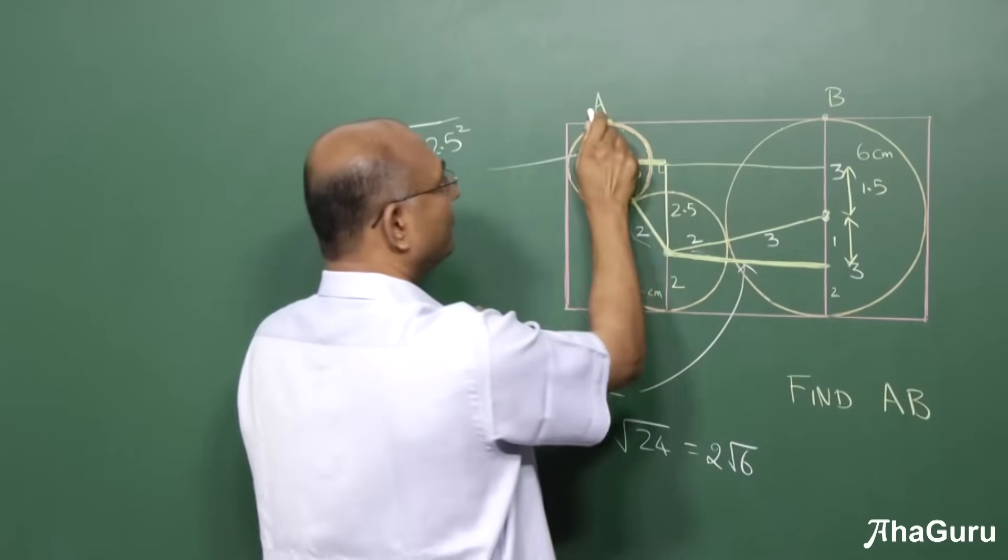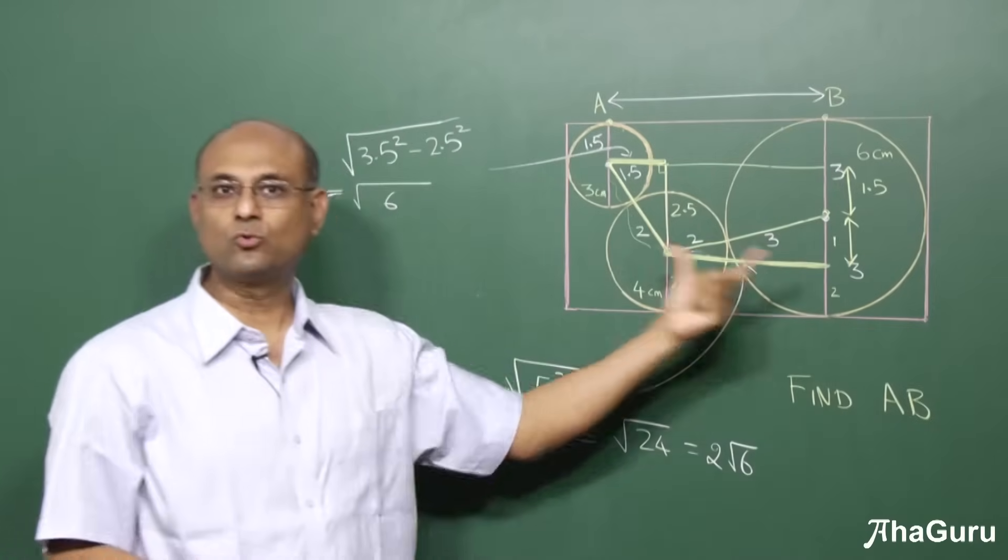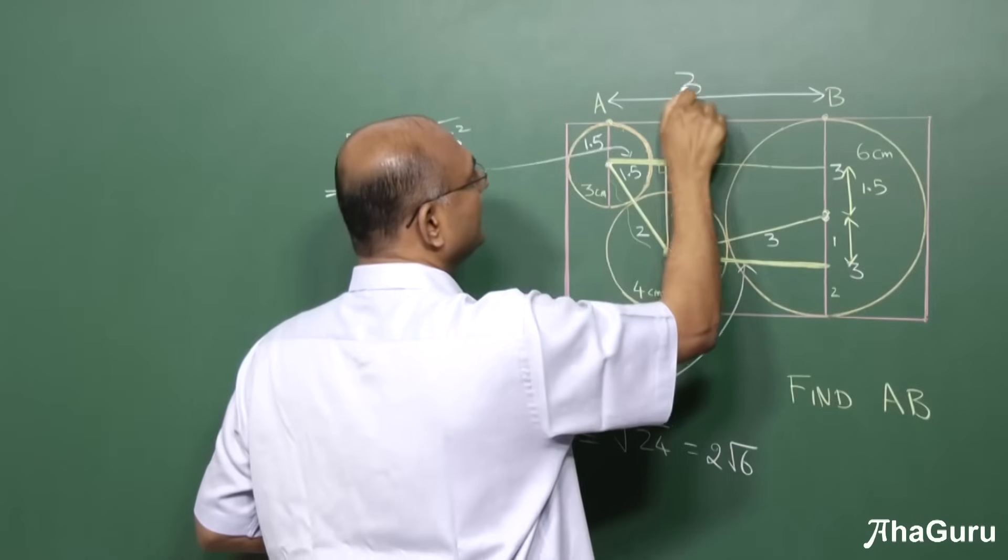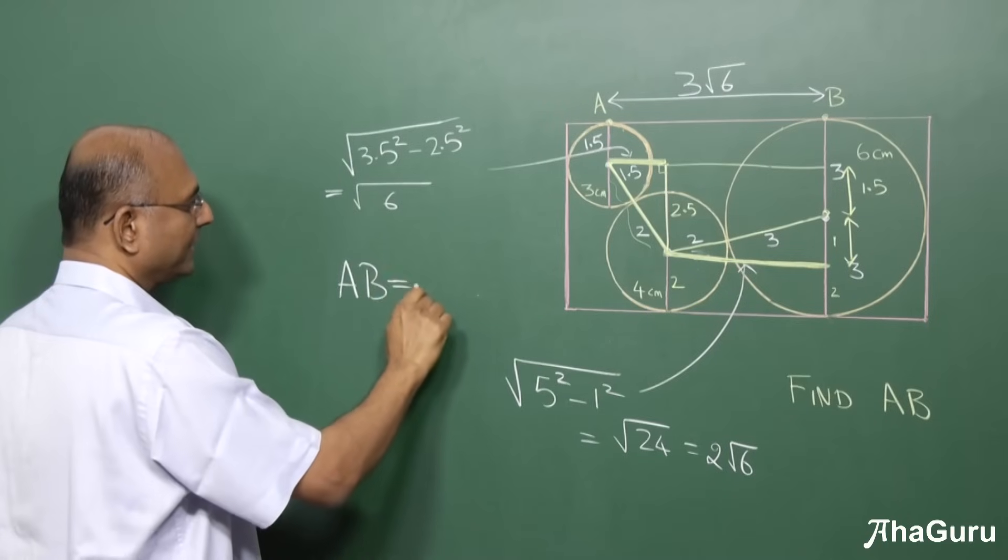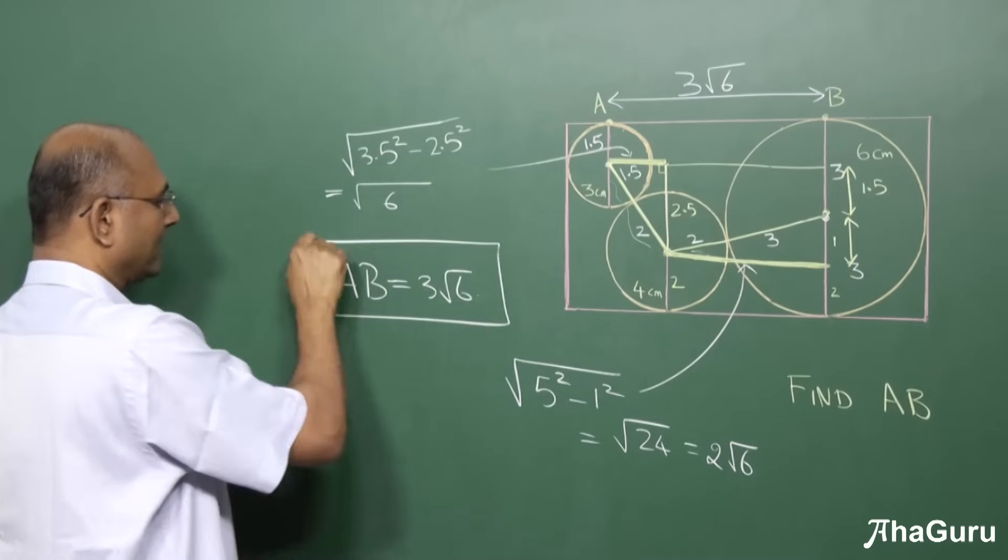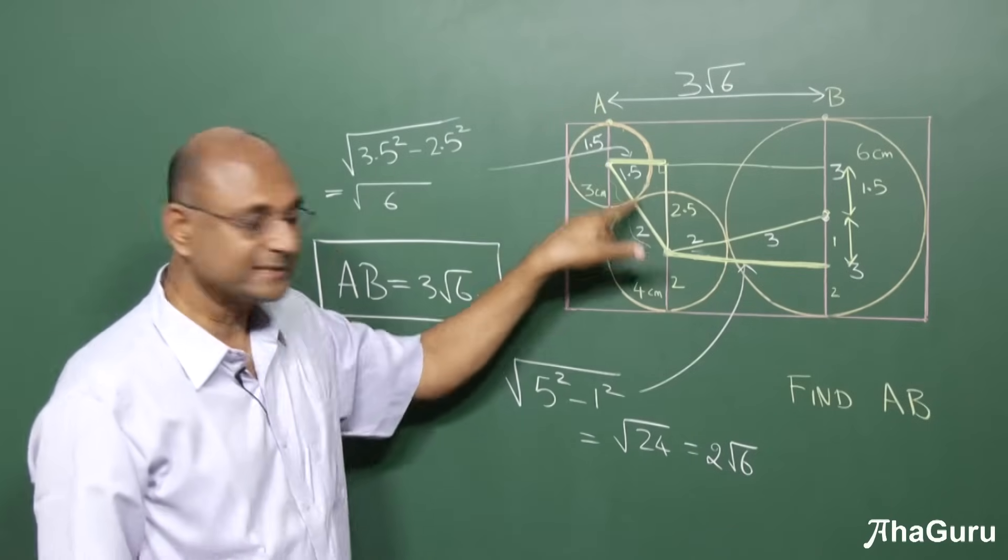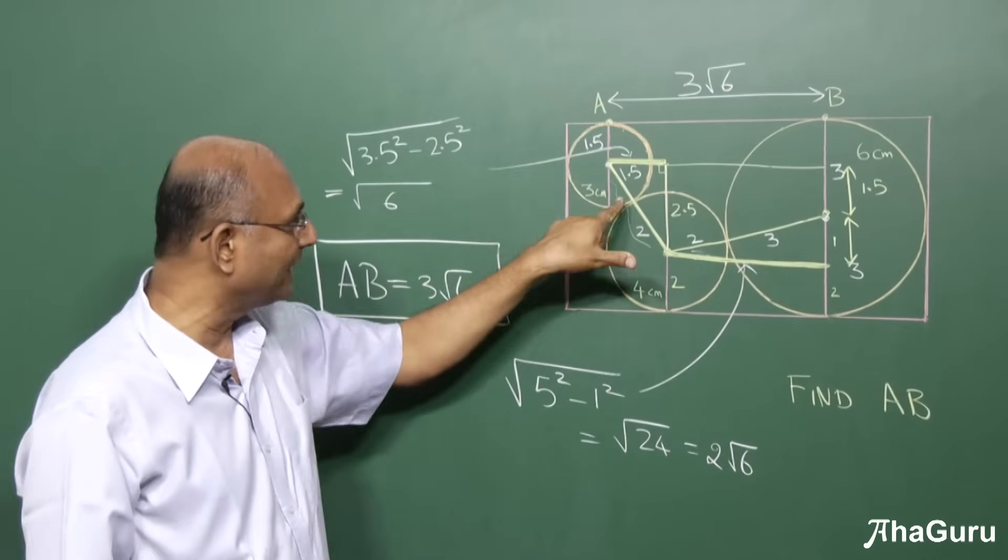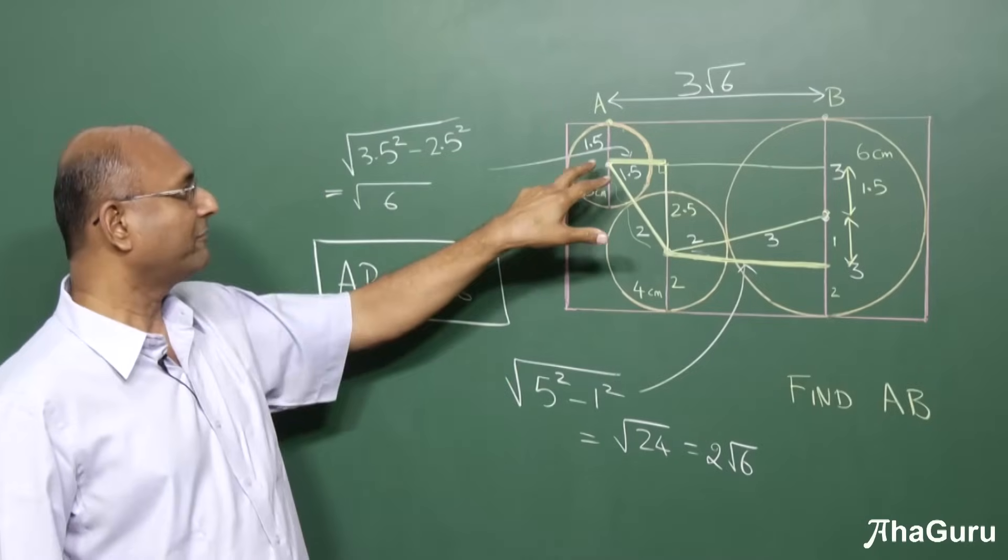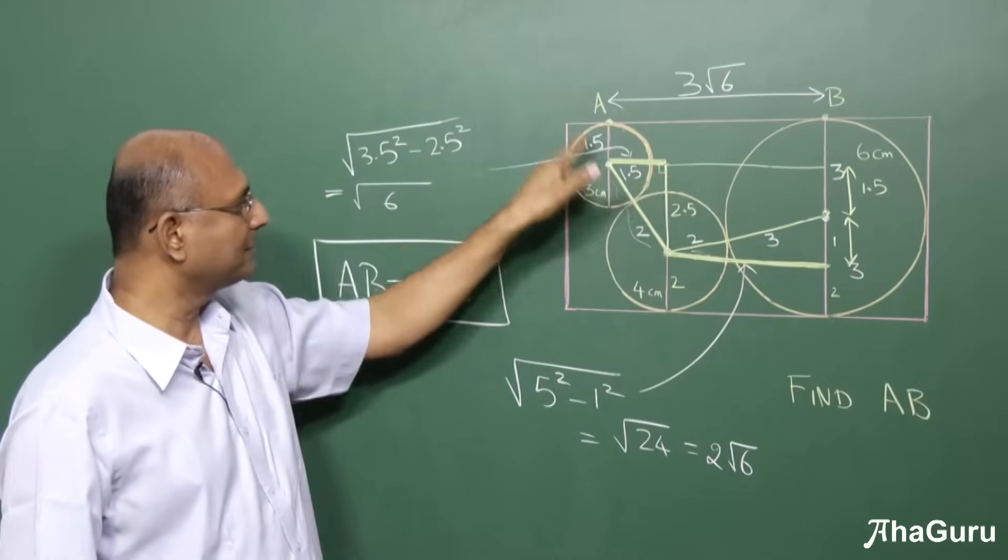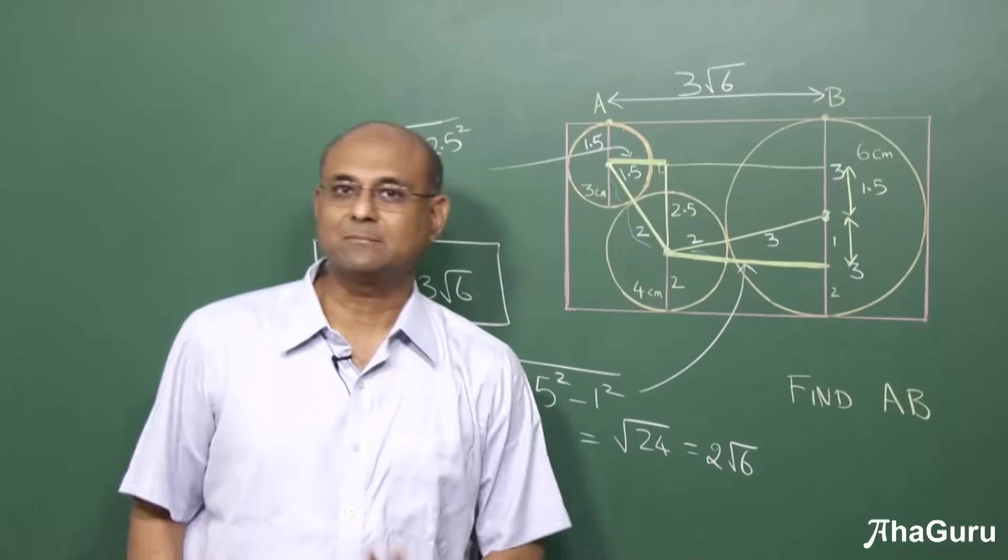This length is root 6, but AB is this length plus this length, these two are equal. So therefore, the length from A to B is root 6 plus 2 root 6, therefore 3 root 6. So therefore, the answer to this question is AB is 3 root 6, and all we have used is Pythagorean theorem and the fact that if two circles touch each other, join the centers and the line will pass through the point of contact. Of course, we have to keep in mind that the tangent must be perpendicular to the radius. That's it.